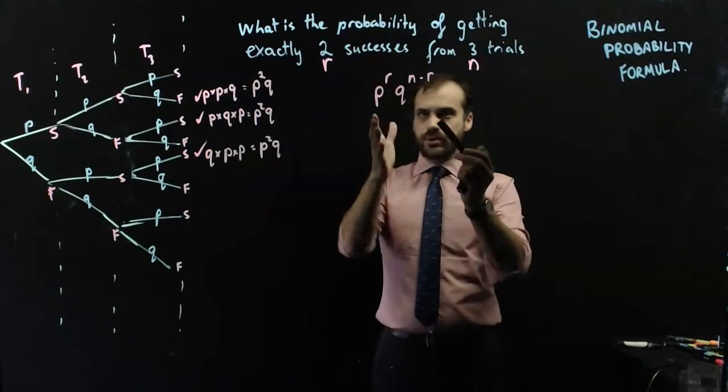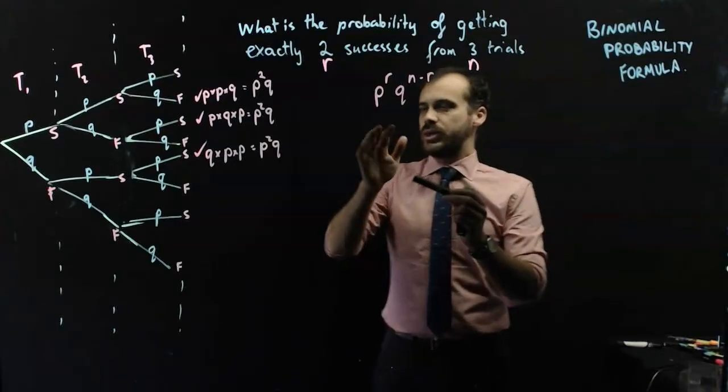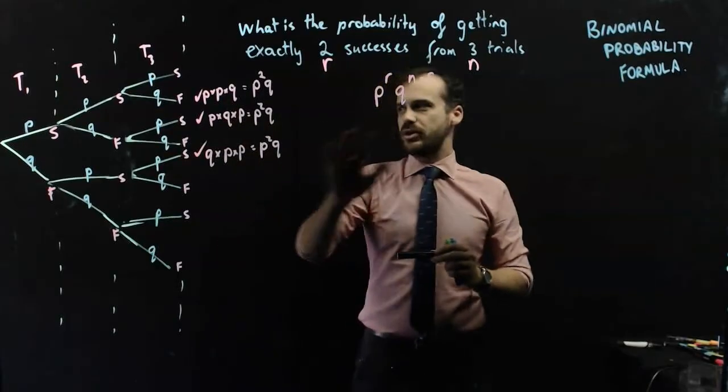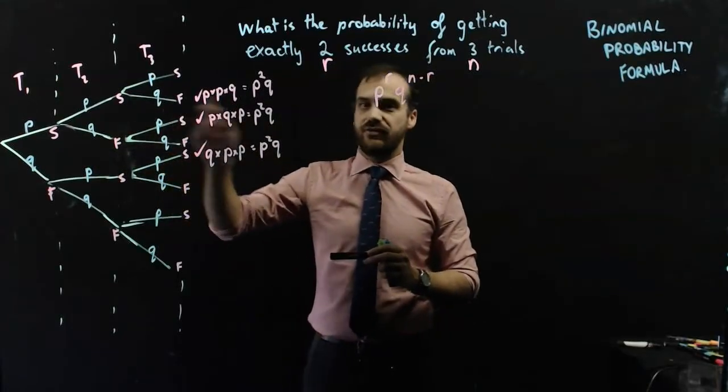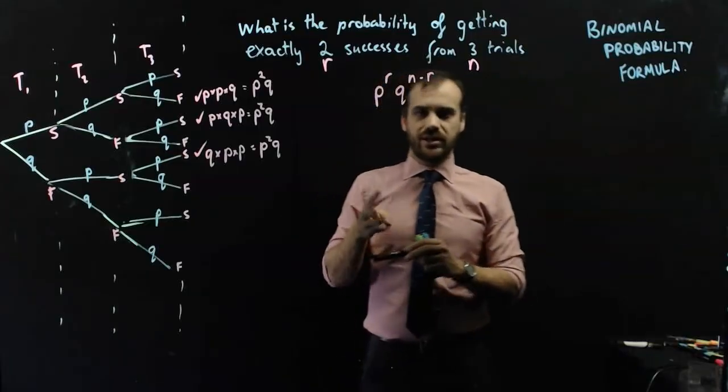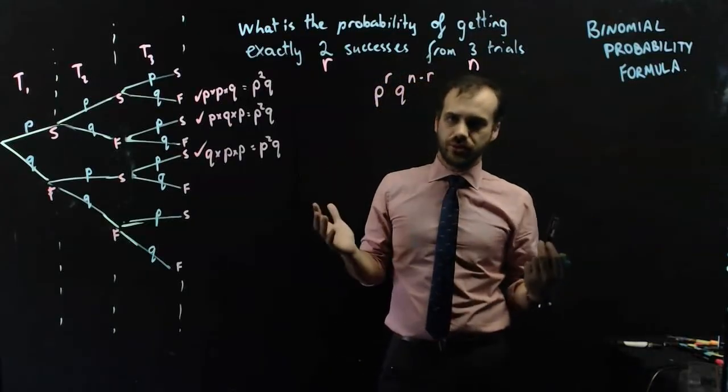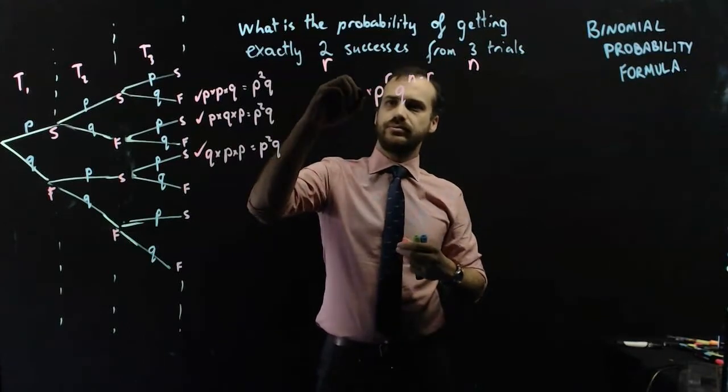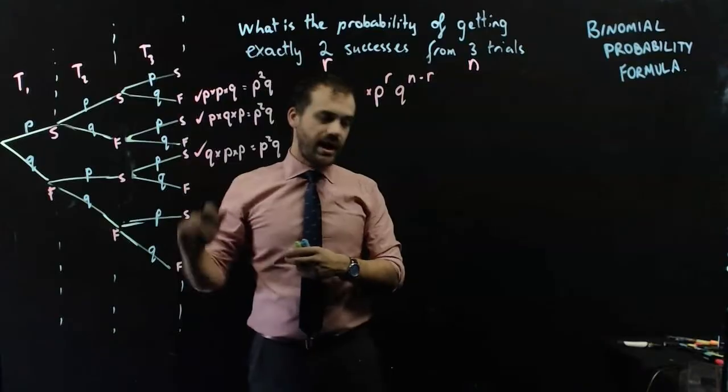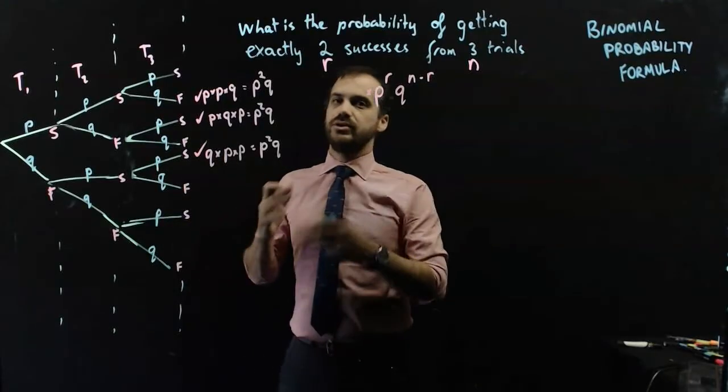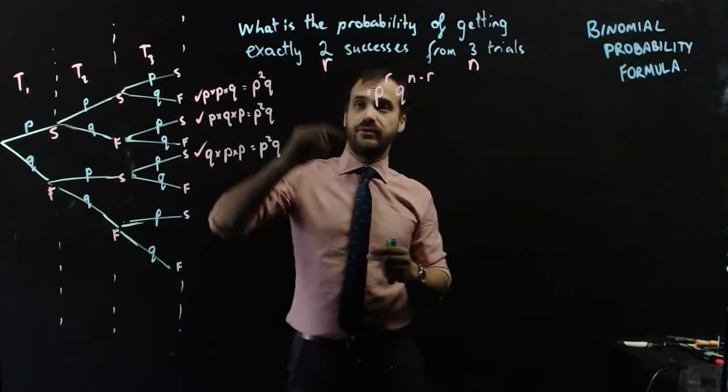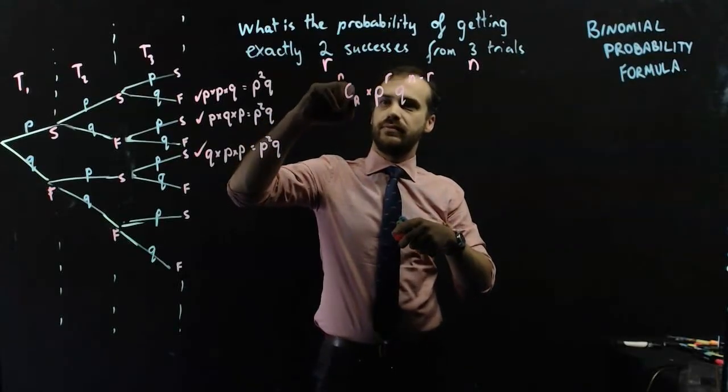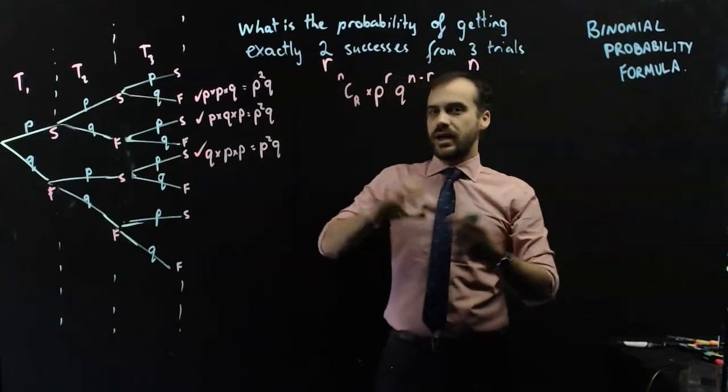Okay, that's a pretty good start here. We know the probability of getting just that branch. But I don't want just success, success, failure. I want two successes and one failure, and I don't care about what the order is. So we need to then have a multiplier. How many branches does it happen in? And we can use NCR for that. NCR.